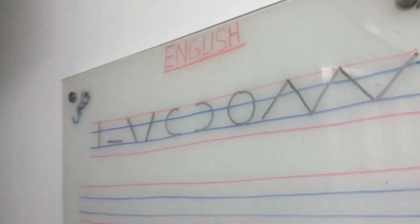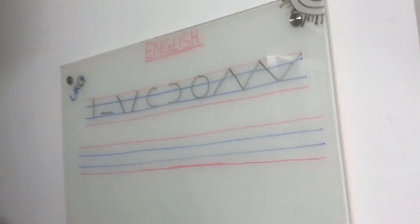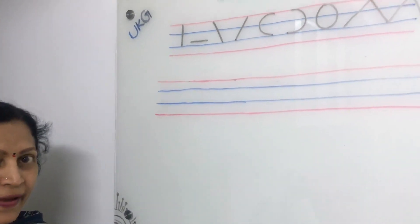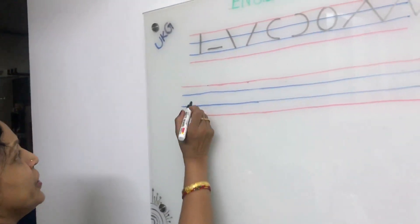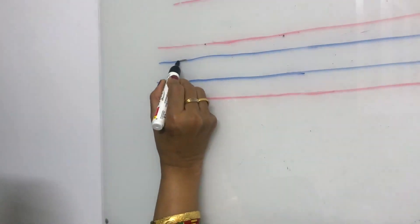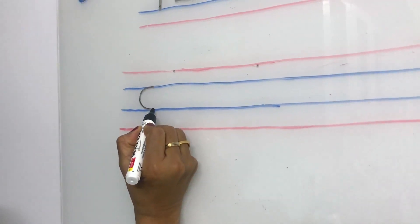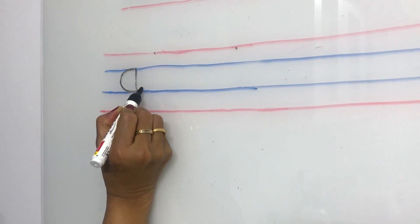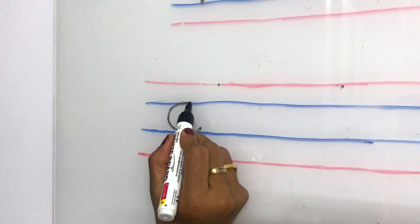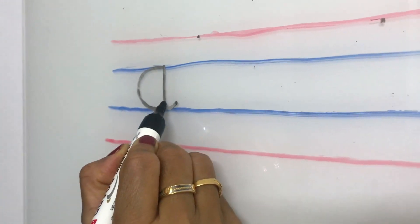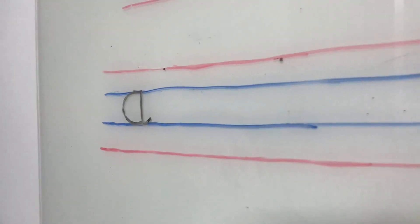Now are you ready children? Ready for writing? Come on. See the book. Now we are writing small A. I will show you how to write the small letter A. Look here. Blue line to blue line, small curve, and from here small standing line and small curve makes small A.